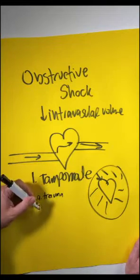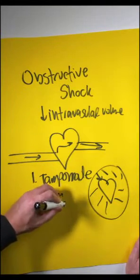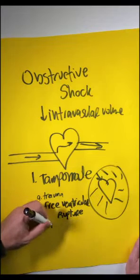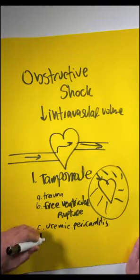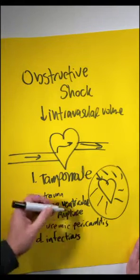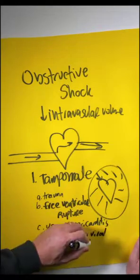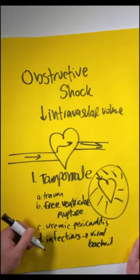Tamponade can come from a variety of causes. It can come from penetrating trauma, from free ventricular rupture post-MI, from uremic pericarditis, and from infectious causes of the pericardium including viral, bacterial, and really any infection that affects the pericardial space.